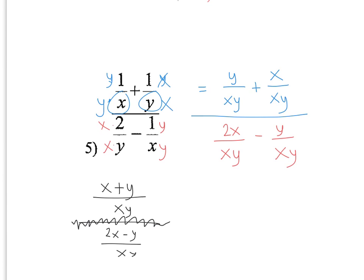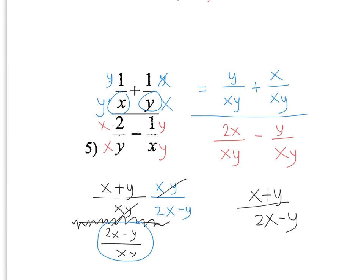When you're dividing fractions, I'm going to multiply by the reciprocal of the denominator. So this is going to be xy over 2x minus y. These two xy's cancel out, so your answer is going to be x plus y over 2x minus y.